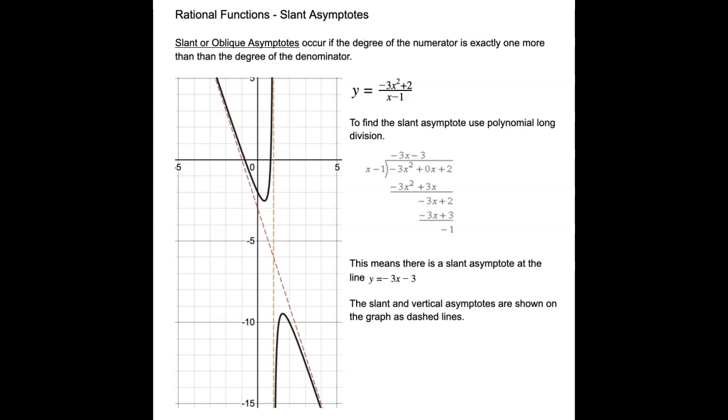Now, I want to talk about the slant or oblique asymptotes that occur in some rational functions, and they occur if the degree of the numerator is exactly one more than the degree of the denominator.